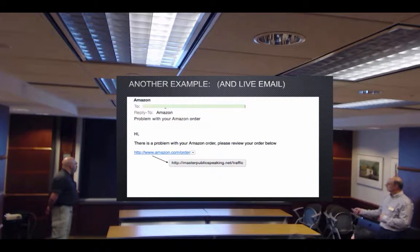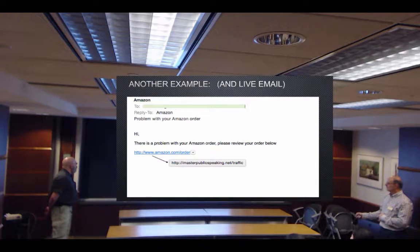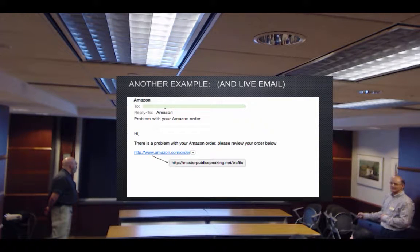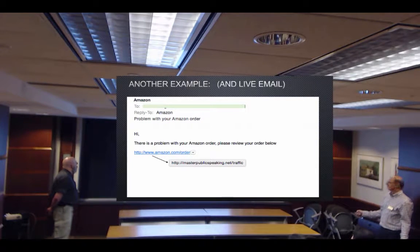Here's another example — a popular company: Amazon. We get a lot of these. That looks like a legitimate link, doesn't it? But when I hovered over it with my mouse, this is what I got: masterpublicspeaking.net traffic. What is that? And plus, I didn't have an order — so how did I get an order confirmation all of a sudden?